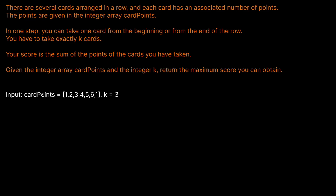Let's look at an example. We have card points, which is the array [1,2,3,4,5,6,1] and k equals three. So we want to maximize the cards we can take, and we know that we have to take one from the beginning or the end at each pick. They're both one at the ends, but we need to be careful because the next pick available will matter. If we take from the right, the next card we can pick is a six. If we took from the left, the next card would be a two, which is smaller. So we want to take from the right here.